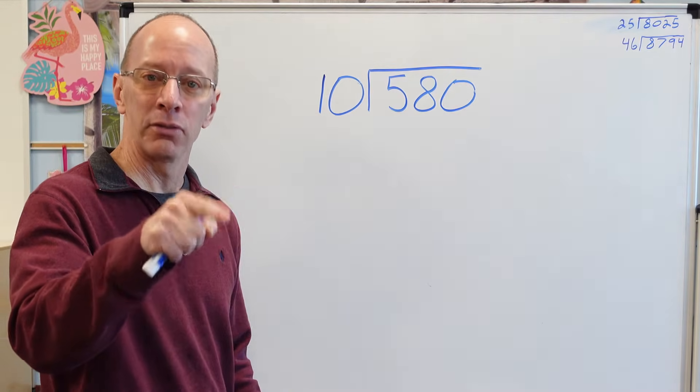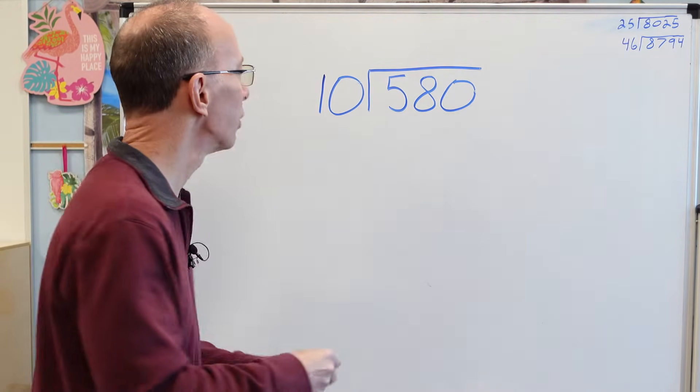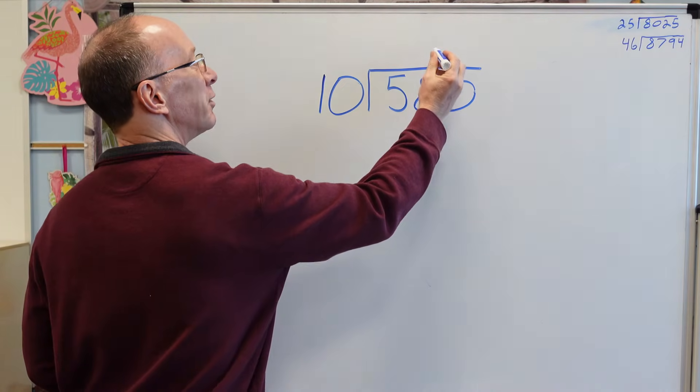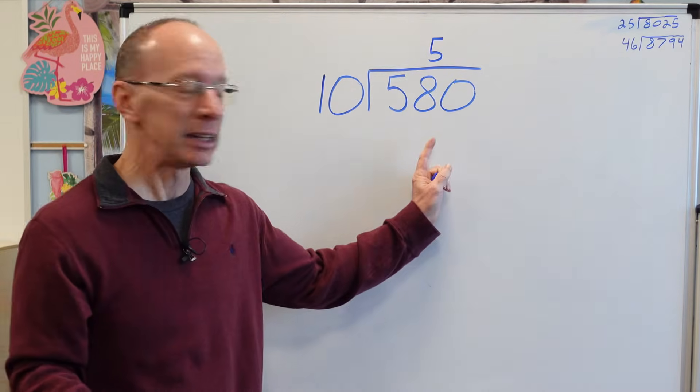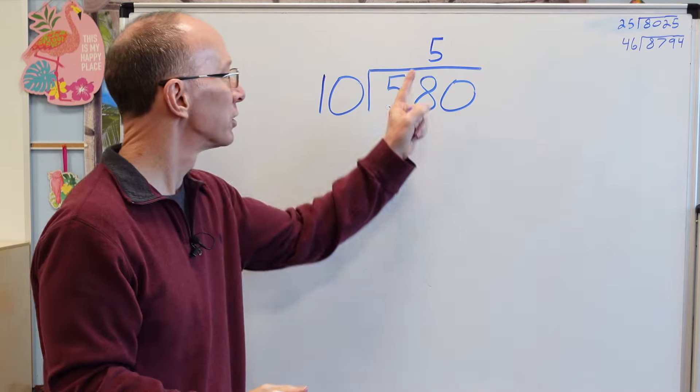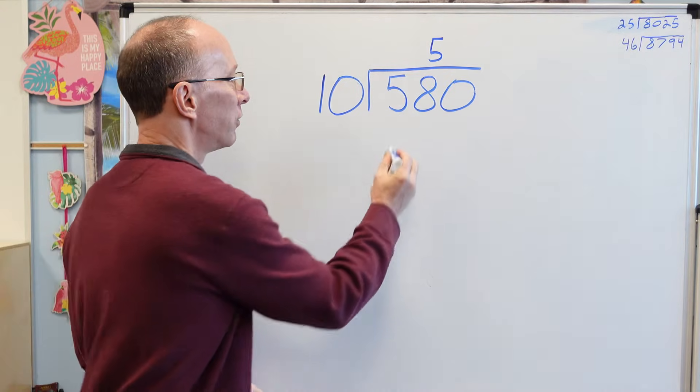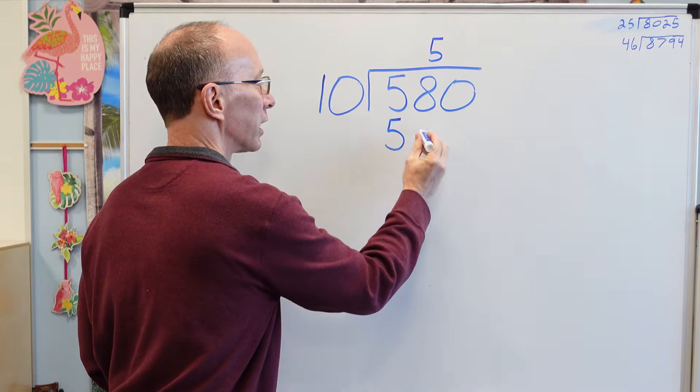10, 20, 30, 40, 50. Five times. So I'm going to just go ahead and put the 5 right here, right above the 8. Make sure you put it right above the 8. So then 5 times 10 equals 50, just like that.